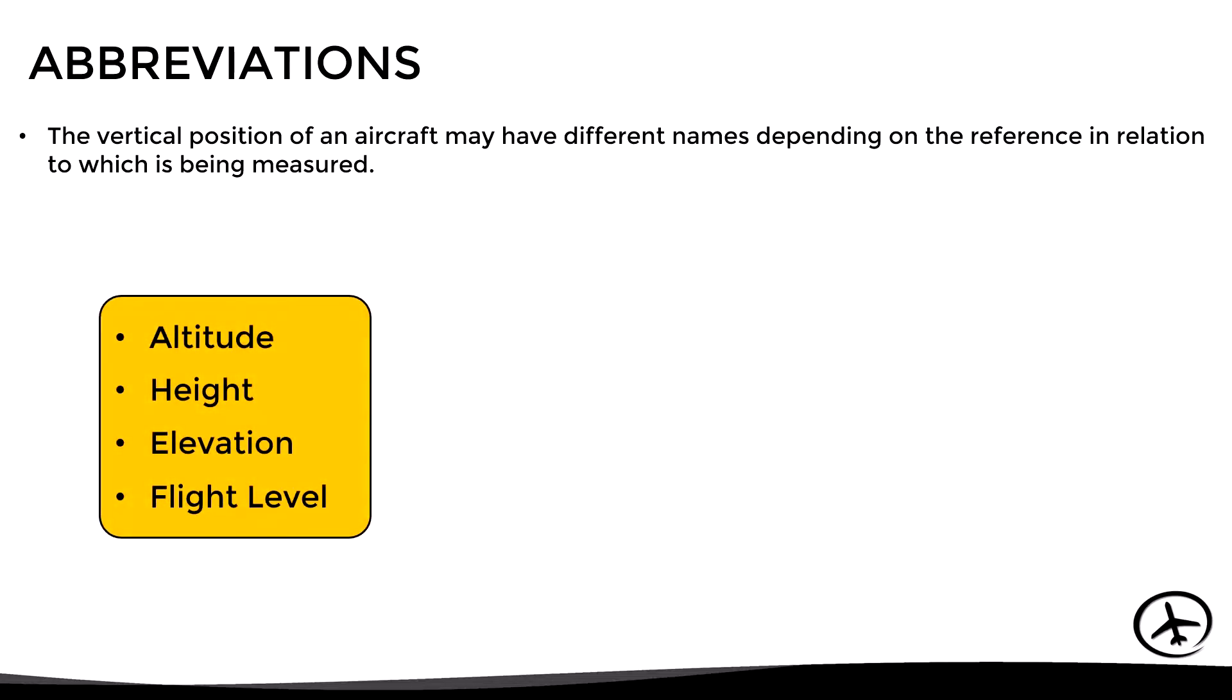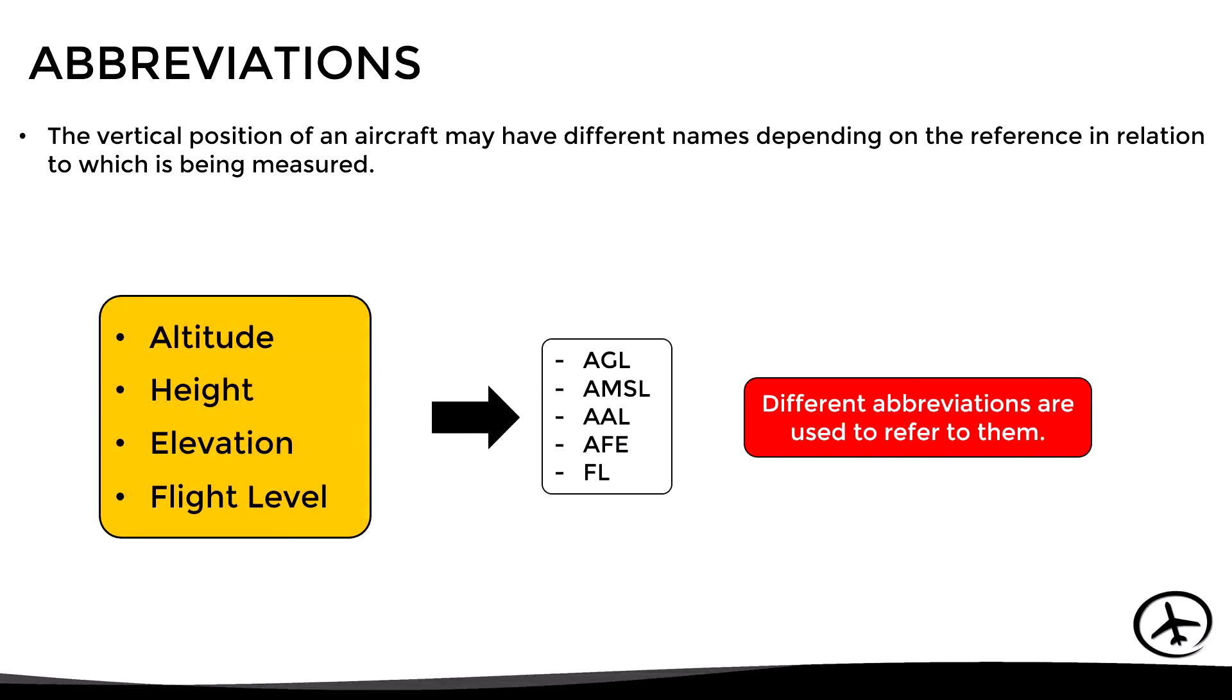Specifically these terms are altitude, height, elevation, and flight level. In many cases, certain abbreviations are used to refer to these terms. There are some abbreviations whose meanings are very similar to each other, therefore it is important to learn to identify each one and know when to use it.